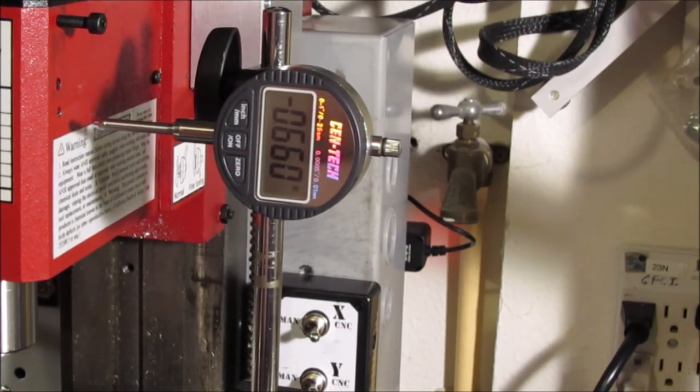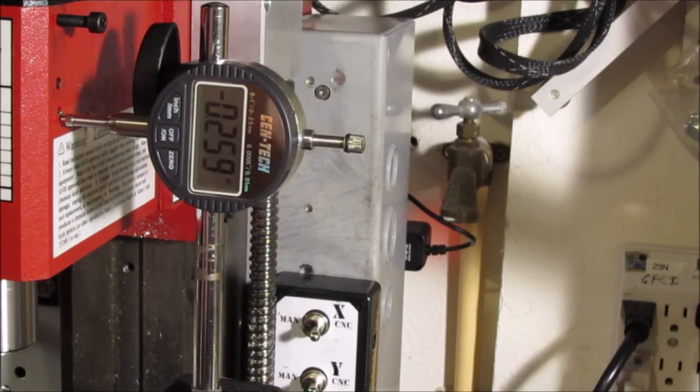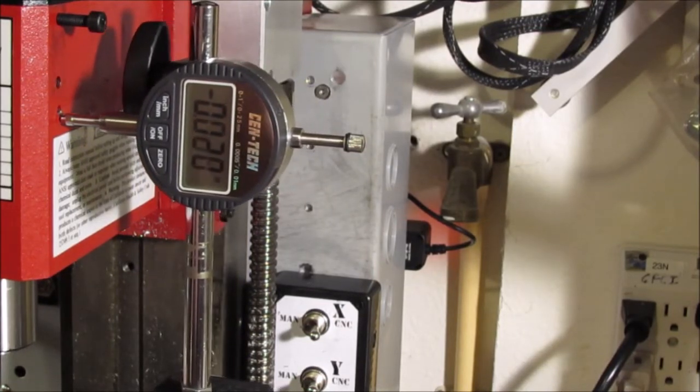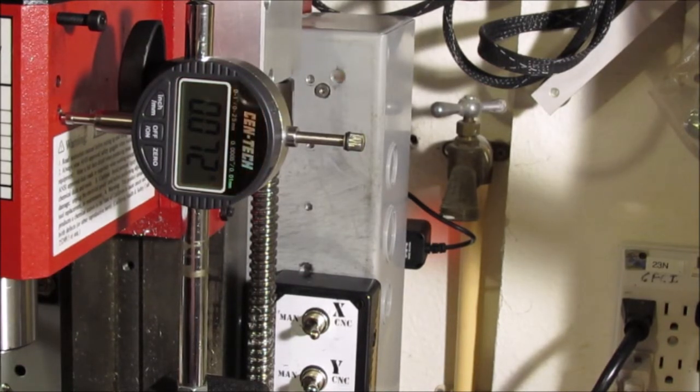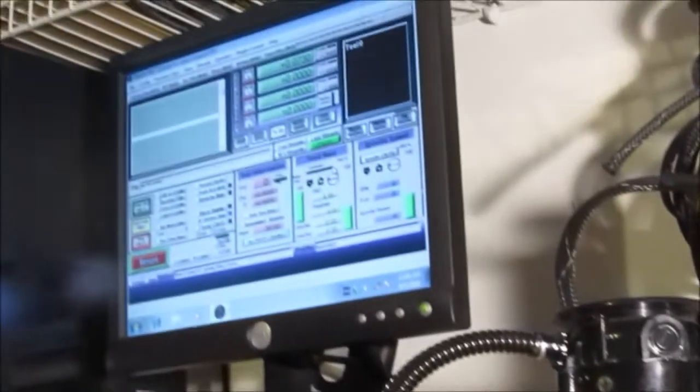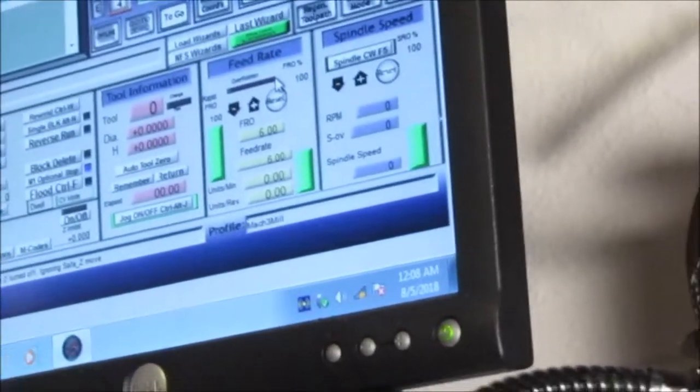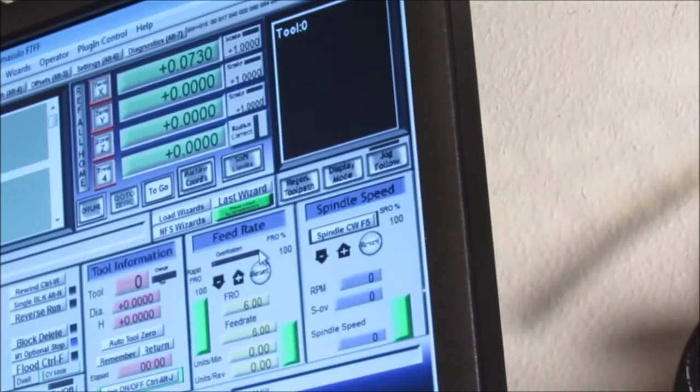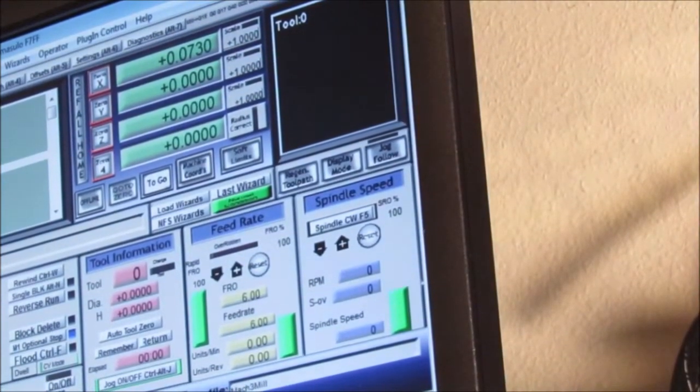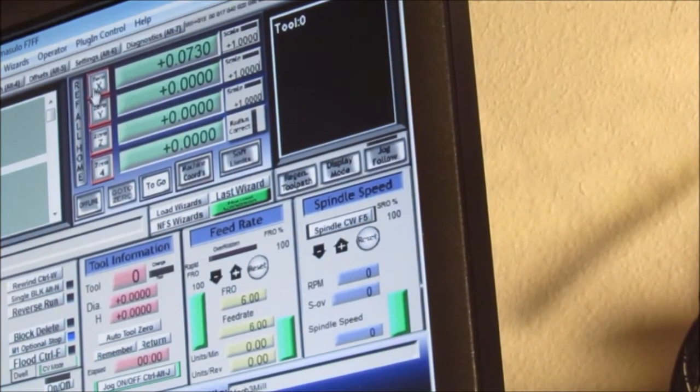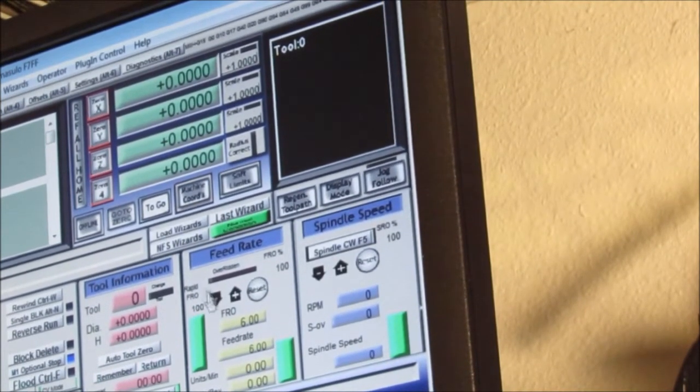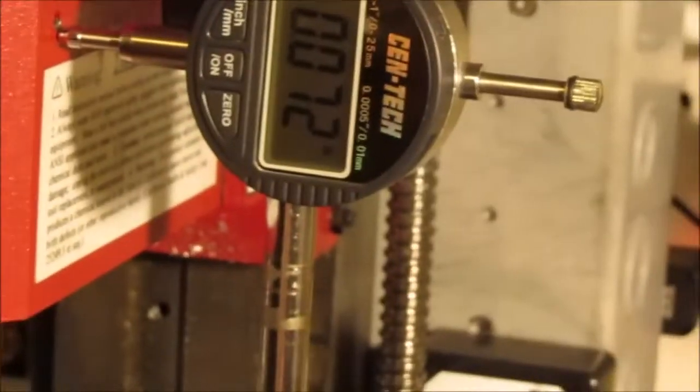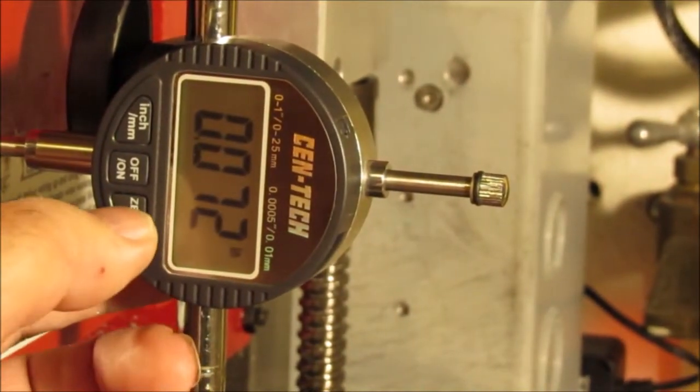What I'm gonna do is I'm gonna move it towards the gauge. Doesn't matter where, anywhere. Let's take that. That's our reference point. What I'm gonna do is, and I don't know if you're gonna be able to see Mach 3, but I'm gonna zero X, Y, and Z. And actually all we really have to do is X in this case, but we'll do X, Y, and Z. That's zero. I'm also gonna zero the meter.